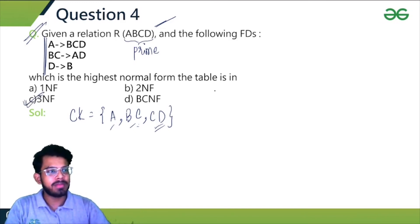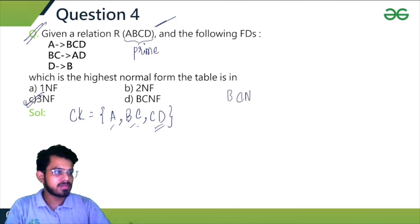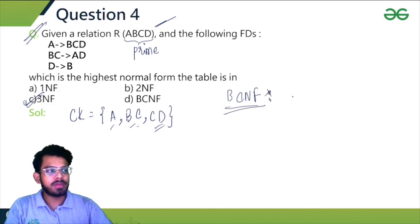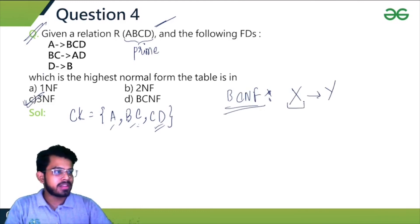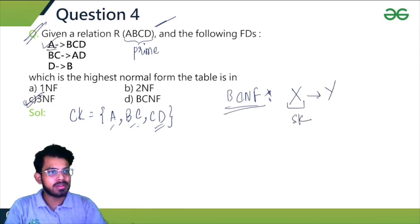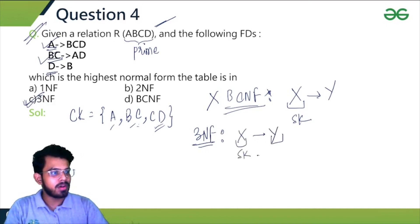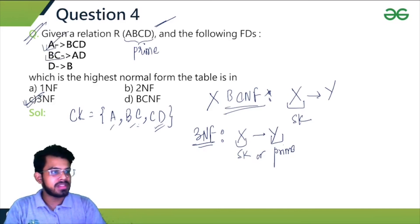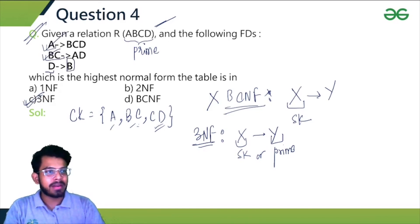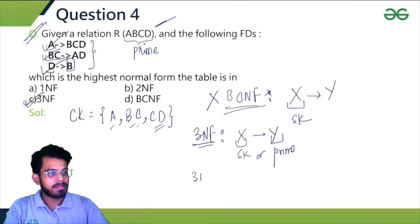Let's verify by testing. For BCNF: A is a super key — okay; BC is a super key — okay; but D is not a super key, so the relation is not in BCNF. For 3NF: A is a super key — okay; BC is a super key — okay; D is not a super key, but B is a prime attribute, so that FD satisfies the 3NF condition. All functional dependencies satisfy the 3NF property, confirming the relation is in 3NF.